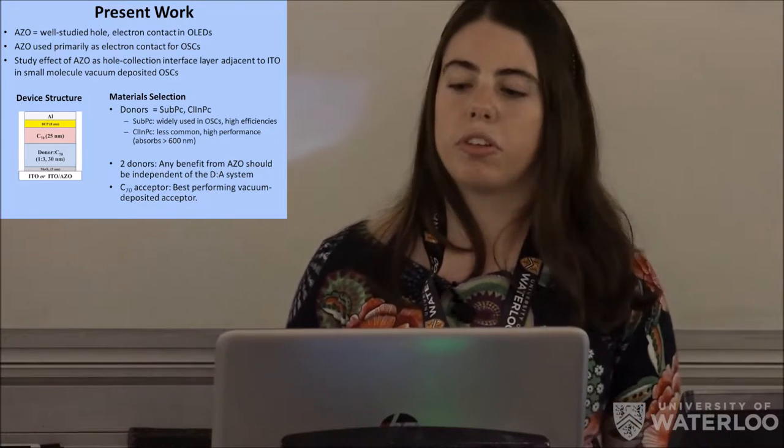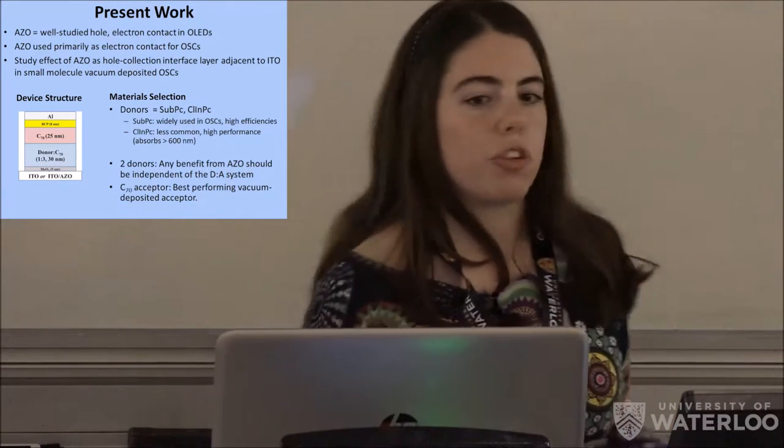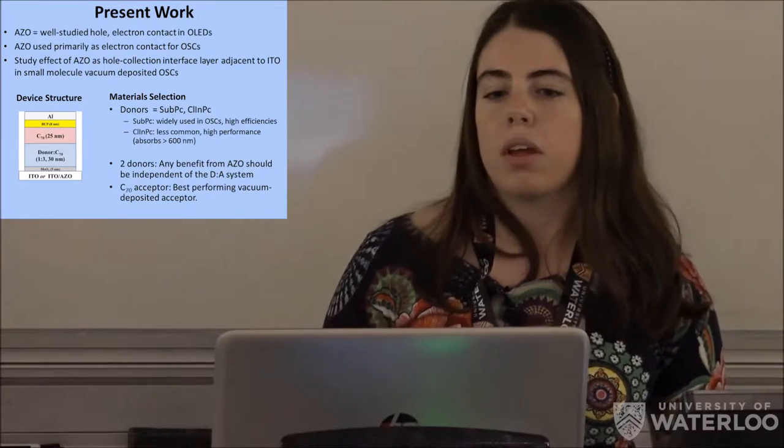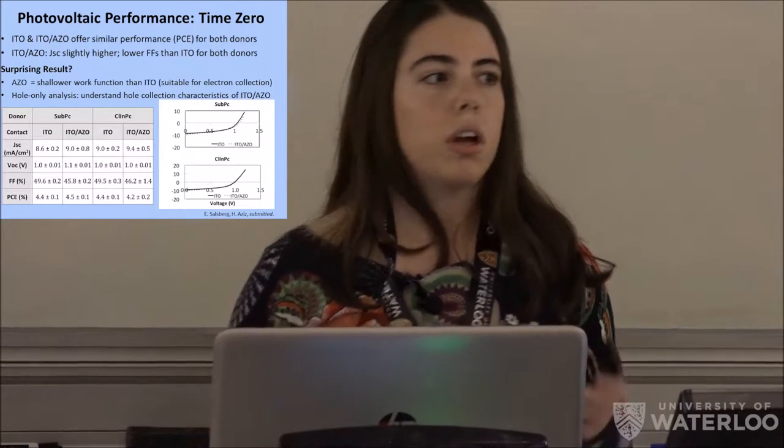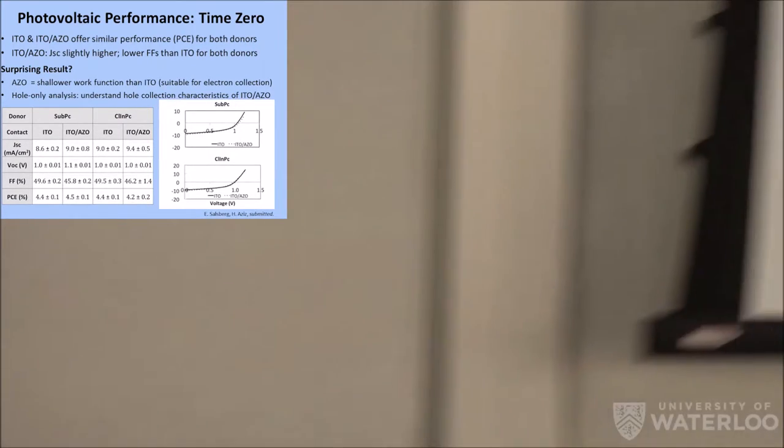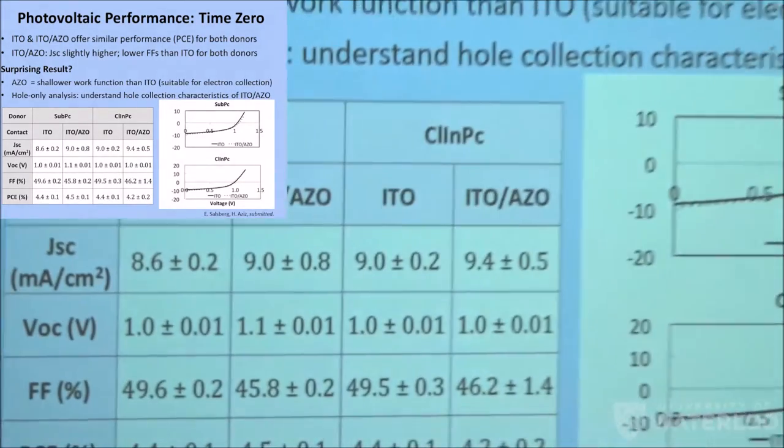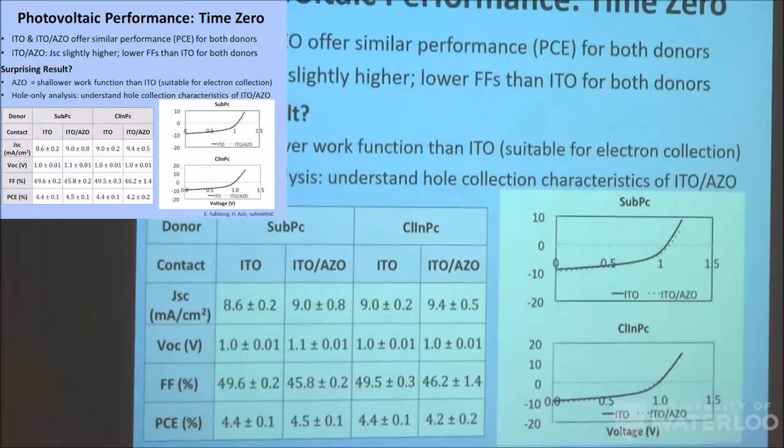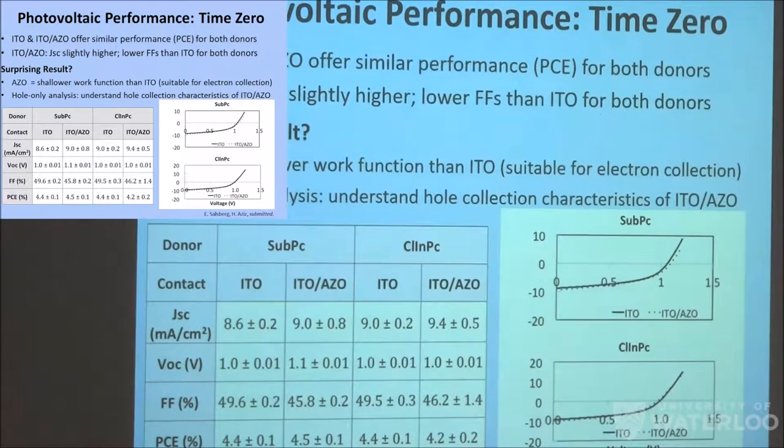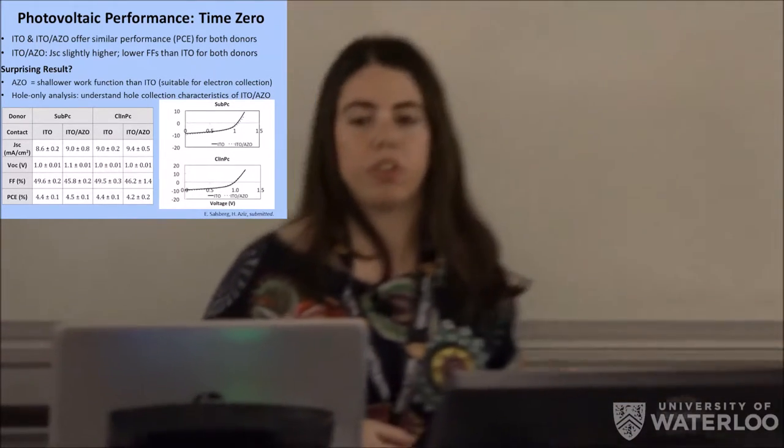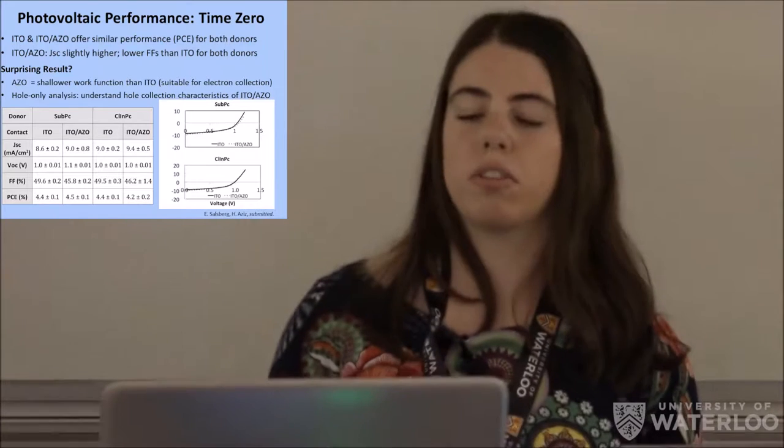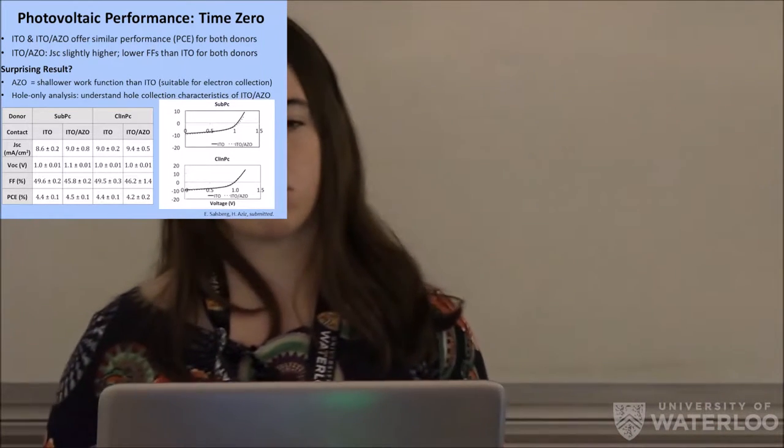So we made solar cells with the device structure I just showed you, and measured the photovoltaic performance of them. And as you can see at time zero, the efficiencies are pretty much similar across the board, about four to four and a half percent. So that's actually pretty good for these small molecule vacuum-deposited organic solar cells we're making here, and considering it's also only a single device and not multiple devices. So for ITO azo, you can actually notice that the photocurrent values, so that's JSC up here, is slightly higher, but you have slightly lower fill factors as well, and that is a result of azo being a little bit more resistive than ITO, which we'll talk about a little bit later.